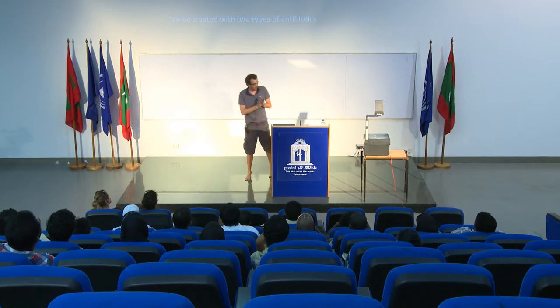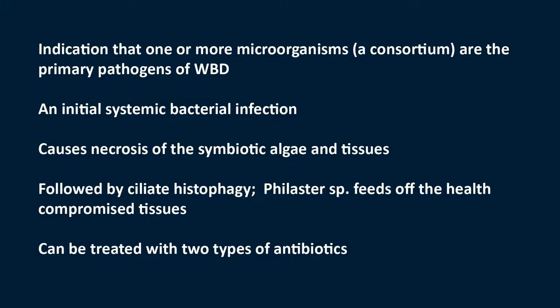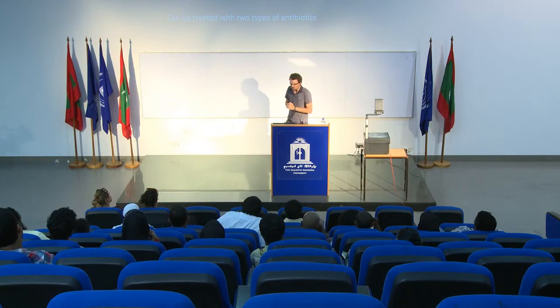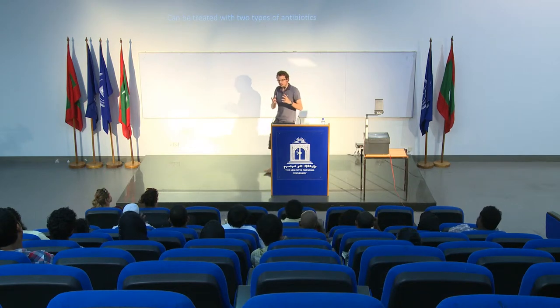What this study showed us was our first indication that one or more microorganisms — this consortium — are the primary pathogens of white band disease. There's an initial systemic bacterial infection caused by any one of those three pathogens. We also found it doesn't have to be those specific three; any potential pathogen can cause this initial infection. It causes necrosis of the symbiotic algae in tissues, and then you get ciliate histophagy, where ciliates eat the health-compromised tissue.